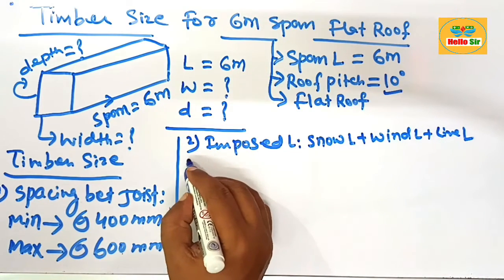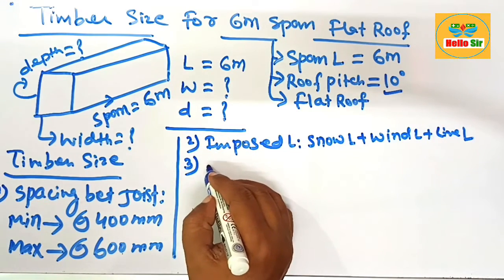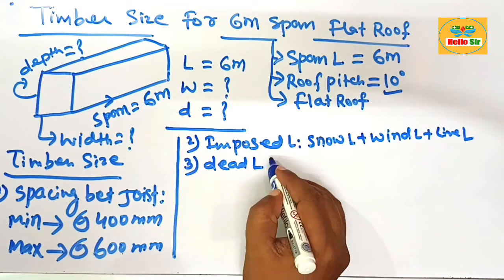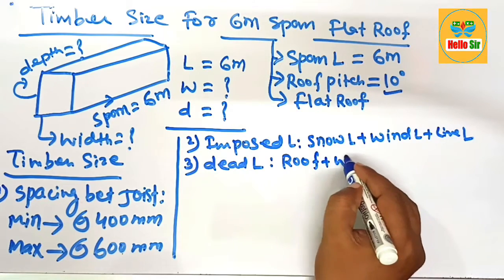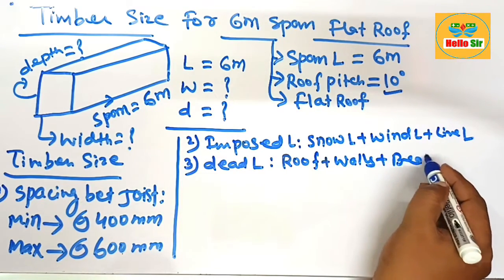And third is dead load. What will be dead load? The load of roof, walls, beams and columns.